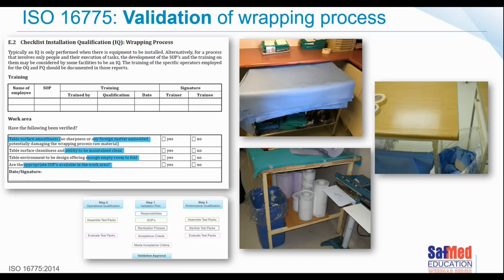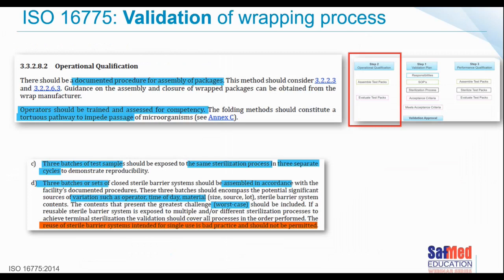The checklist asks: what is the table surface like — is it smooth? Are there any foreign materials embedded on the surfaces? In some CSSD settings, people use theatre trolleys or dressing trolleys that are not necessarily always flat surfaces. Sometimes wooden or laminate surfaces are used, and sometimes people drape pieces of linen to their wrapping surfaces — and it's not clear how often those pieces of linen are replaced. So are the table surfaces clean and maintainable? And is there an appropriate SOP available in that area? We often have SOPs, but they're in a cupboard.